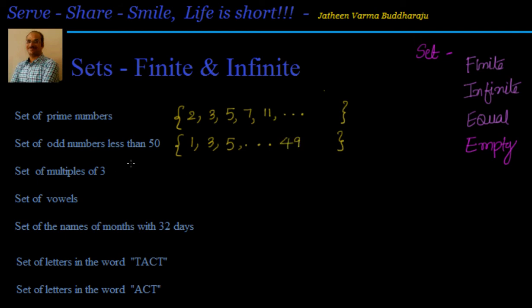Next, set of multiples of 3 — considering natural numbers only. It will be 3, 6, 9, and it continues. In the first and third cases I cannot completely list all the elements, whereas in the second case I know where the boundary is — both the starting point and the ending point.